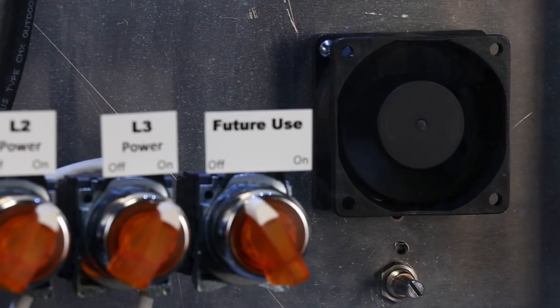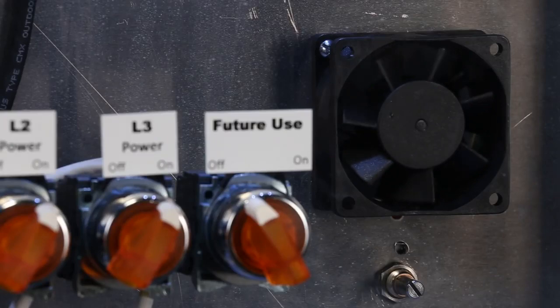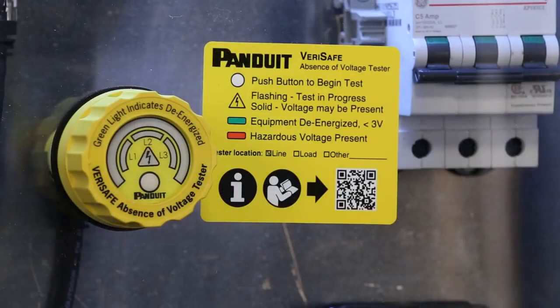In this case, there is still DC voltage in the system, illustrated by this cooling fan still turning. Once the fan stops turning, we can try the test again. This time we get the green light, which means that the AVT has verified the absence of voltage in the equipment.